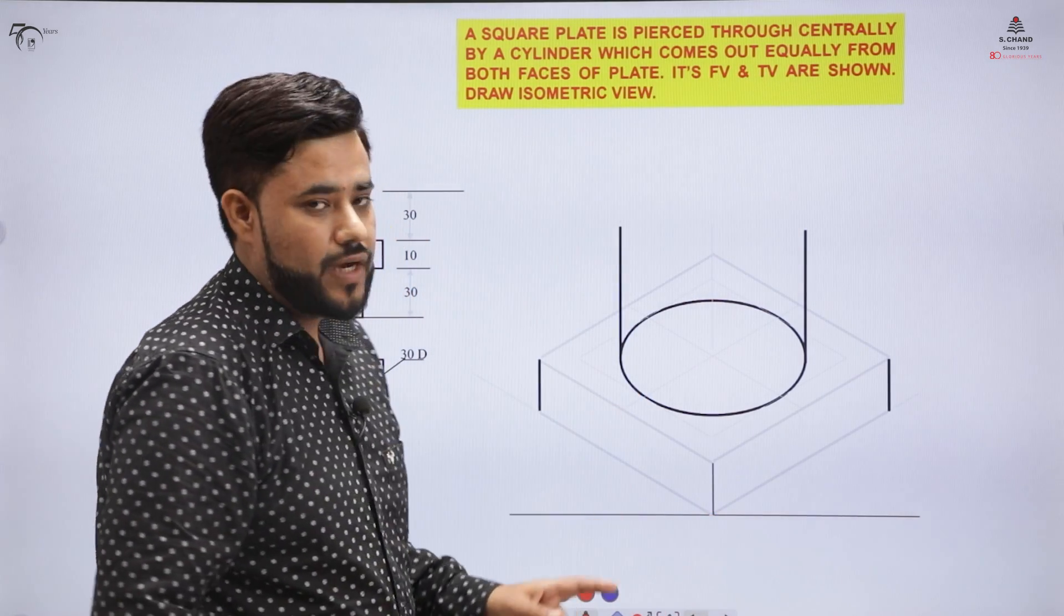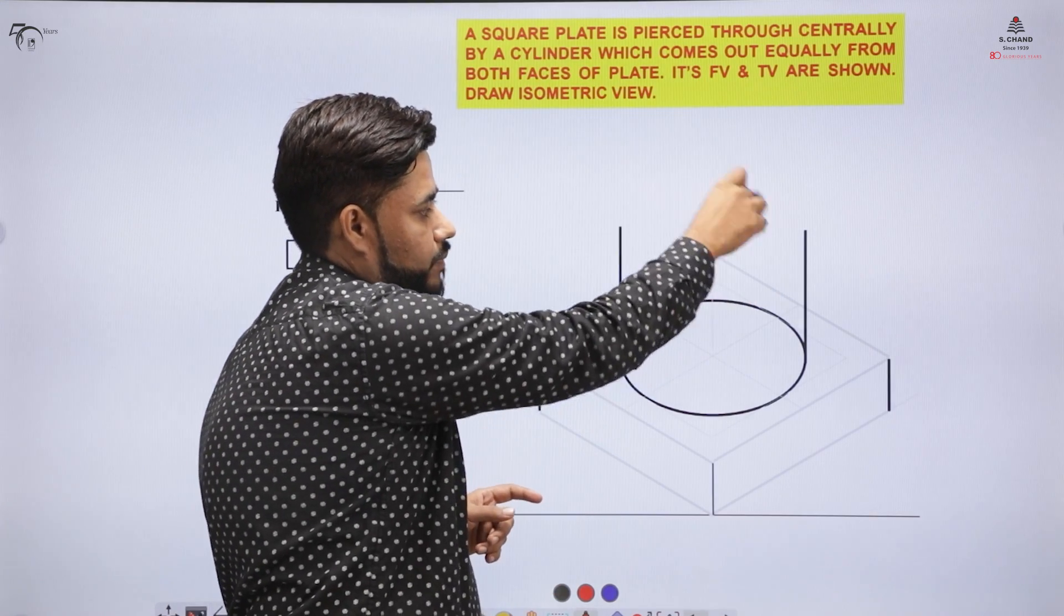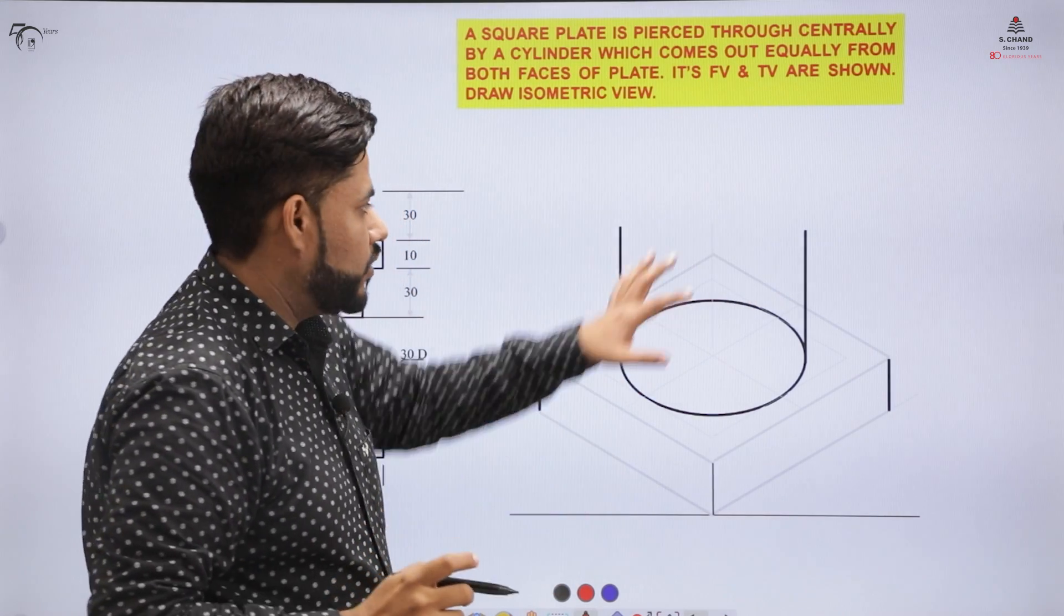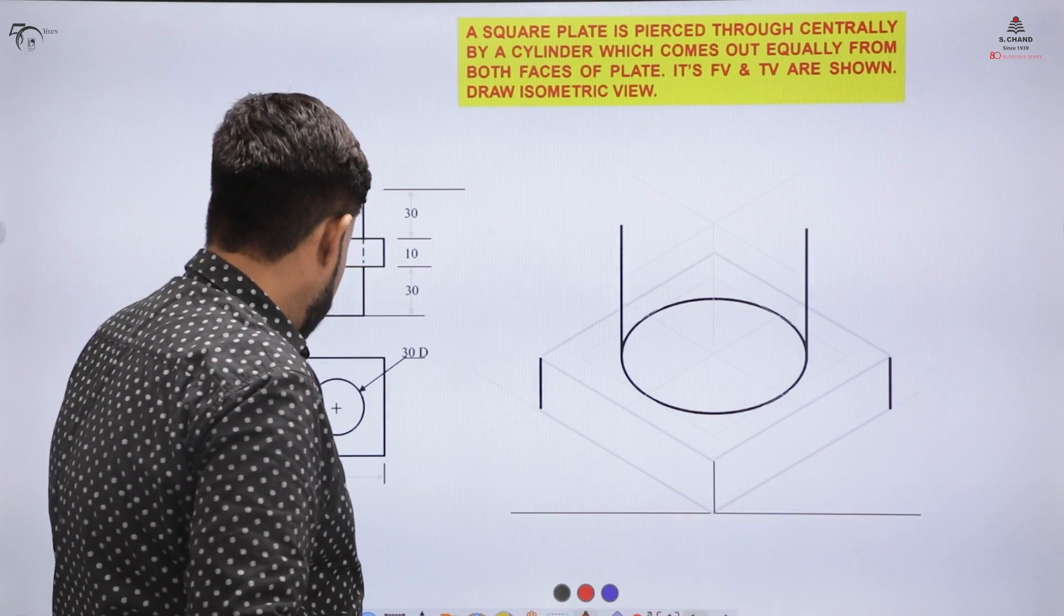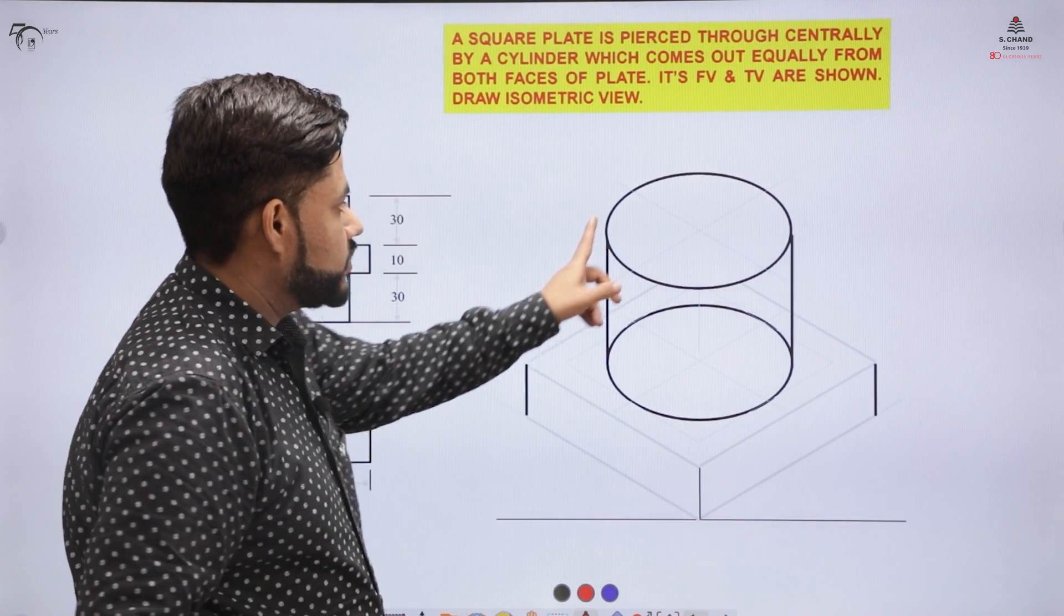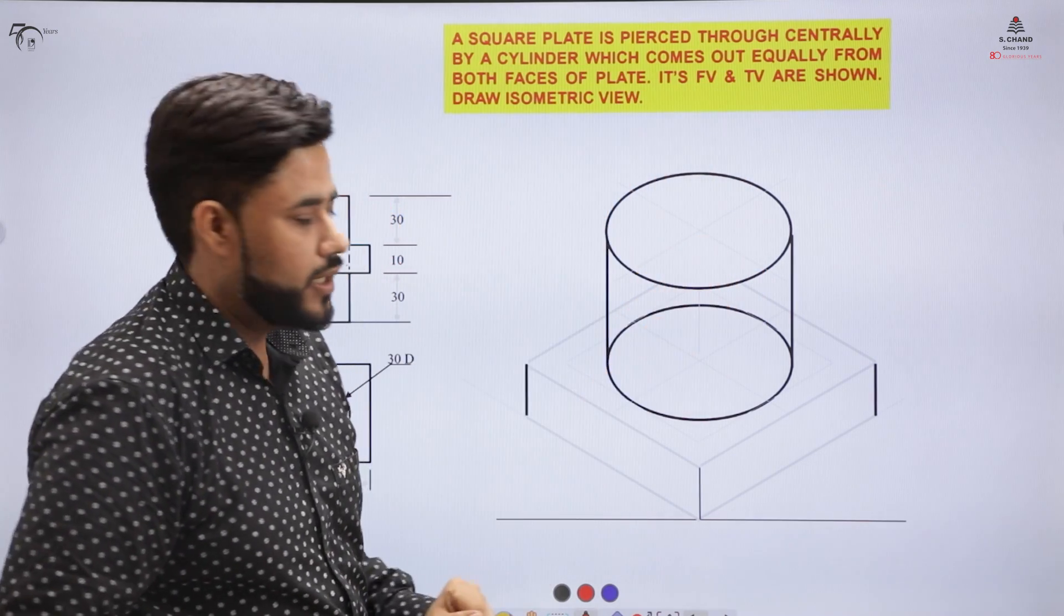The above region would also have a circle and the below region would also have a circle. So for that we have to create that box again and place that ISO circle again on this surface. We have to create that box and inside that box we have to create the ISO circle again.